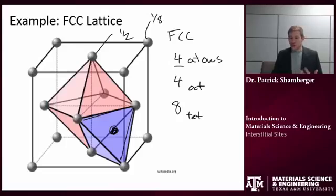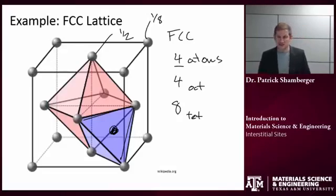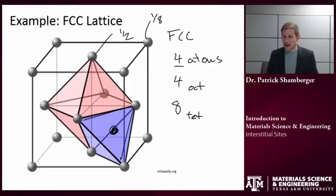It's a useful thing to work through the other structures. For example, BCC or HCP. What kind of sites do they have? And how many of them are there? That's going to play a really important role in determining what a final ionic structure looks like.